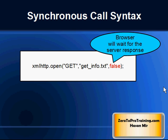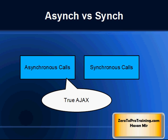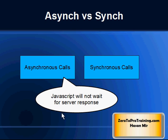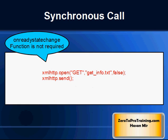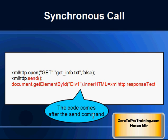So in a nutshell, making asynchronous calls is real Ajax — async equal to true is the way to go. This way, JavaScript will not keep waiting for the server request. Note that when you use async equal to false, do not write the onReadyStateChange function; just put the code after the send statement, as you can see on the screen.